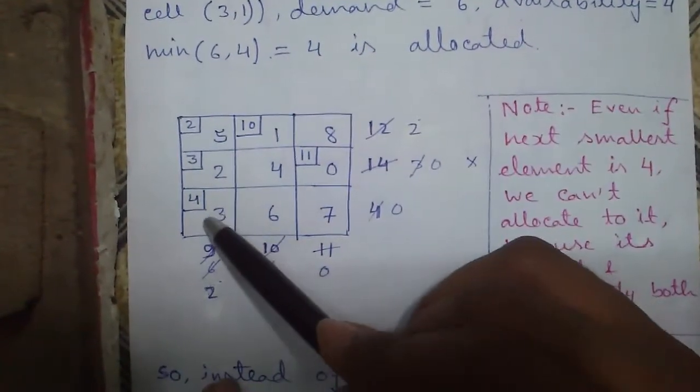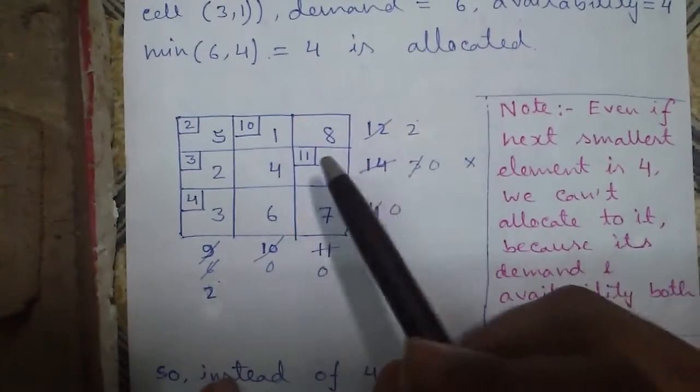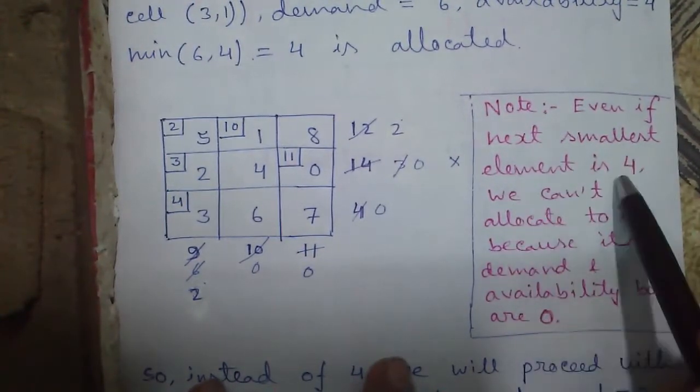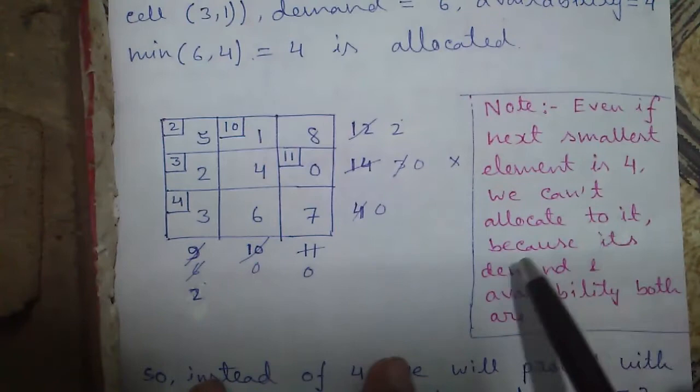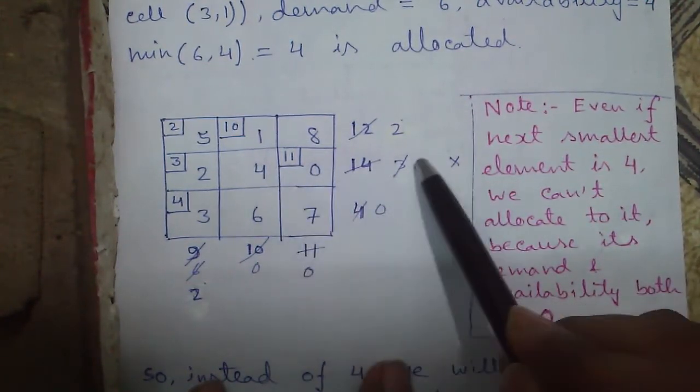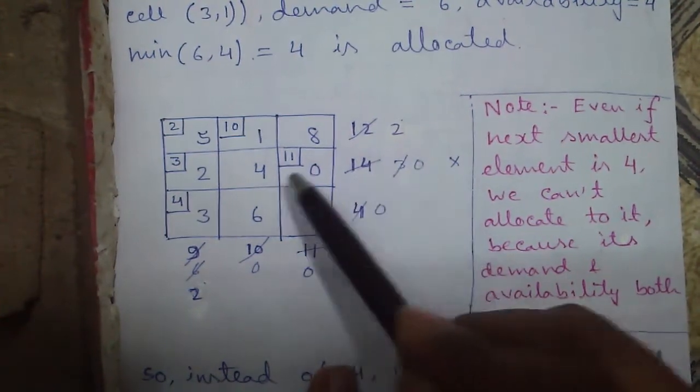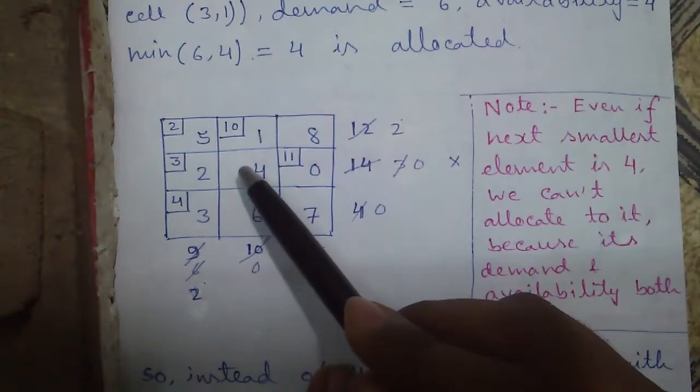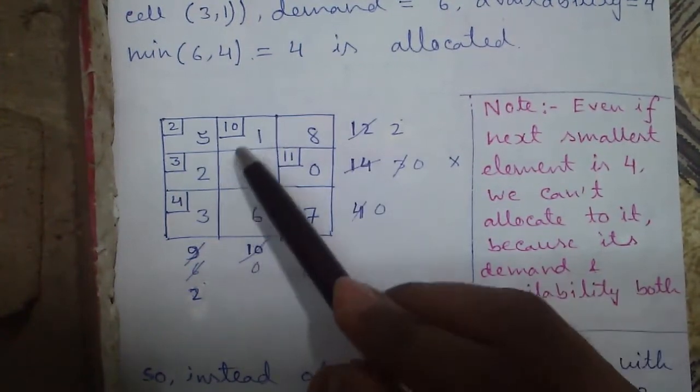So 3 is done. Next smallest element is 4 but remember there is one note: even if the next smallest element is 4 we can't allocate to it because its demand and availability both are 0. So against this number 4 availability is now 0 and demand is also 0, so we can't allocate to 4. We have to proceed to next smallest element that is 5.